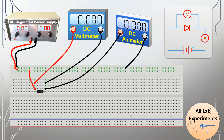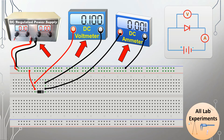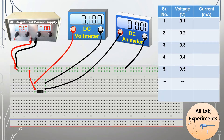Now we switch on our power supply and start the experiment. We will increase the voltage from the regulated power supply and observe the DC voltage across the diode and the current passing through it using the DC voltmeter and DC ammeter. We make a table recording the voltage and the corresponding current. This gives us the diode characteristics in forward bias.